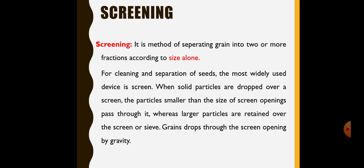A single screen can make the separation into two fractions. For cleaning and separation of seeds, the most widely used device is the screen. When solid particles are dropped over a screen, the particles which are smaller than the size of screen openings passes through the screen. Various larger particles are retained over the screen or sieve surface.